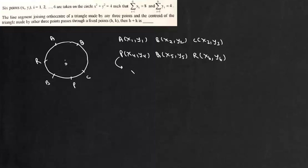Now centroid of triangle made by other 3 points, suppose other 3 points are PQR, then centroid of this triangle made by PQR will be x4 plus x5 plus x6 by 3 and y4 plus y5 plus y6 by 3.